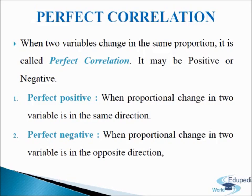Perfect correlation may be positive or negative. First, we will discuss perfect positive correlation. When proportional change in two variables is in the same direction, it is called perfect positive correlation. The coefficient of correlation in this case is positive 1, or plus 1. When data are plotted on a graph paper, all the points would lie on a straight line making a positive slope — that is, a positive relation between the variables.